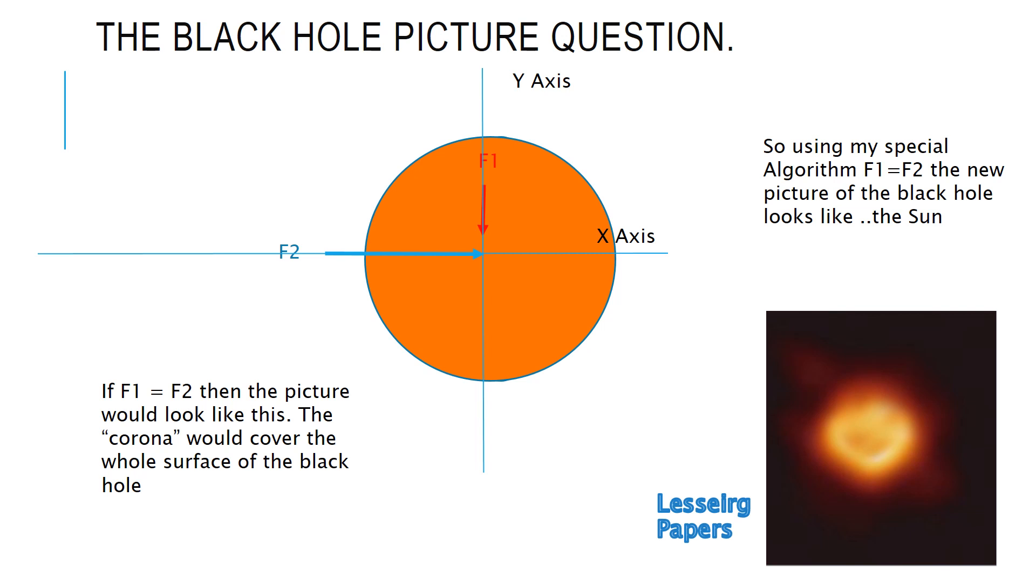So if we take the standard black hole theory that the gravitational force is the same in all directions and F1 equals F2, the picture would look like a round orange ball that would cover the black hole. Using my special algorithm, F1 equals F2, the new picture of the black hole looks like the sun.